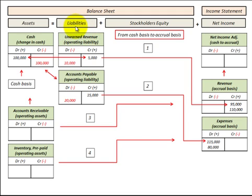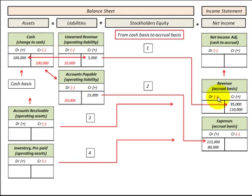The examples I'm going to go through for our liabilities will be unearned revenue and accounts payable. Unearned revenue will affect our revenue as far as net income, and accounts payable will affect our expenses as far as net income. For our asset accounts, I'll go through accounts receivable and inventory or prepaid expenses. Accounts receivable will affect our revenue as net income. That gives us all four situations we'd have to handle when converting from cash to accrual basis.